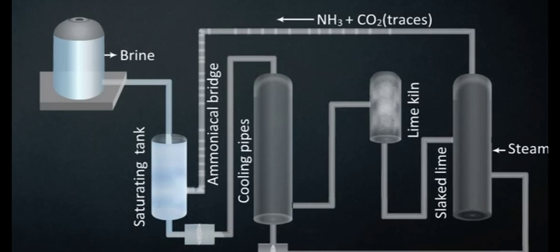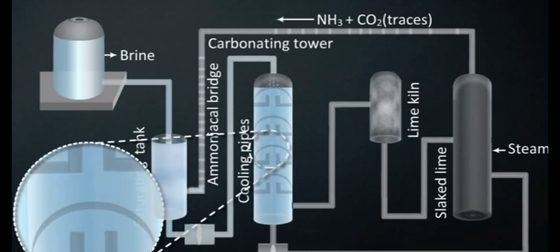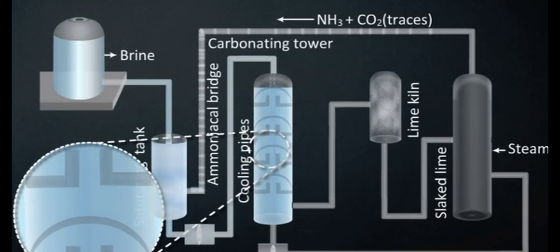In the second step, the ammoniated brine is introduced from the top of a tower known as the carbonation tower. It is packed with a number of horizontal perforated plates, each having a hole covered by a perforated plate.